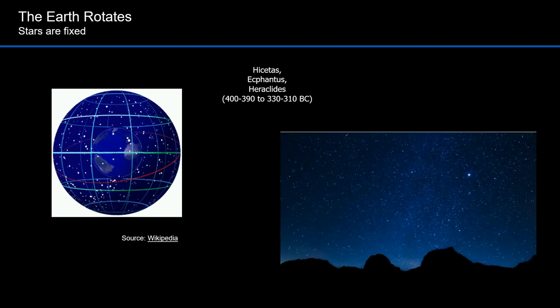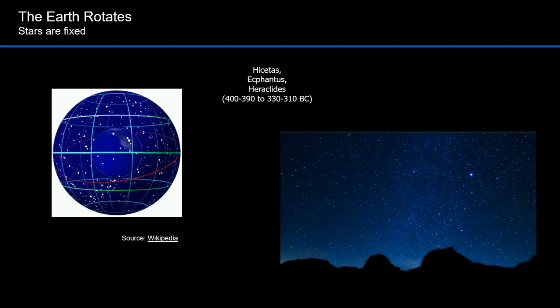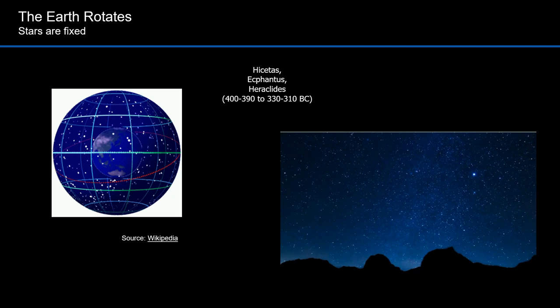Three ancient Pythagorean Greeks proposed that the motion of the stars was apparent, that it was created by the rotation of the earth on an axis. This contradicted the model that many believed that the earth was fixed.